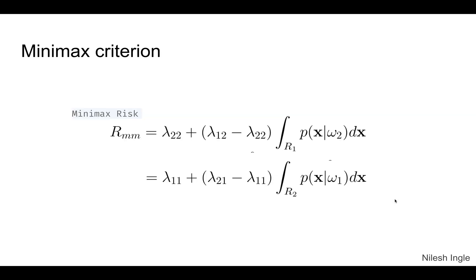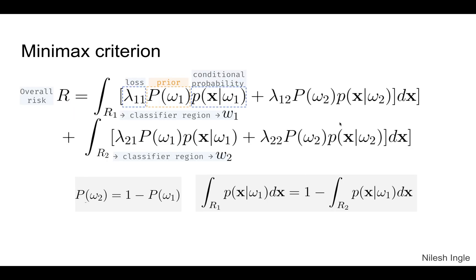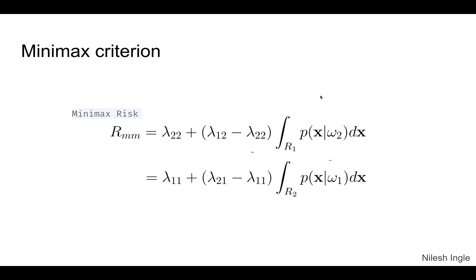And so the minimax risk can be derived to this equation that is shown, which has the term for conditional probability. However, it does not have the term for prior probability that we started with in the overall risk, and is denoted by R_mm.